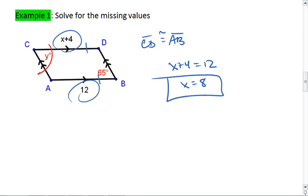Now we can look at the opposite angles. Angle C is congruent to angle B, so Y equals 65.